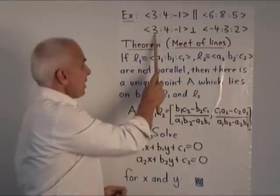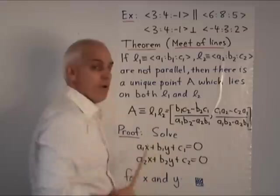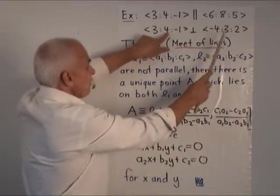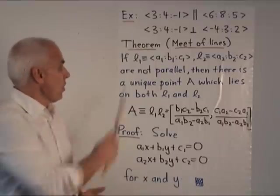On the other hand, the line <3:4:-1> is perpendicular to the line <-4:3:2> because 3 times -4 plus 4 times 3 equals 0.